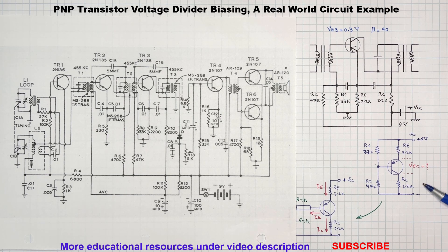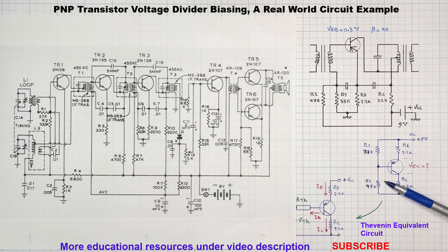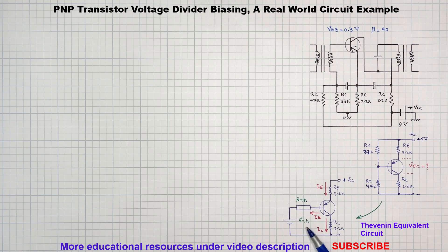So we are working with the PNP transistor biased by the voltage divider R1 and R2. Now we simplify the voltage divider into its Thevenin equivalent.